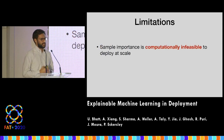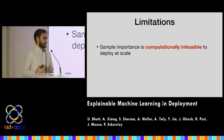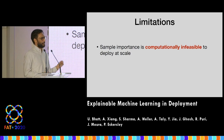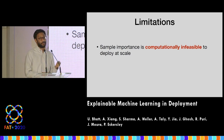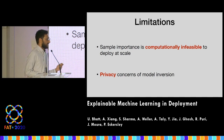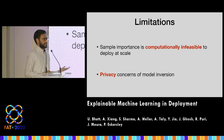Sample importance is well-motivated in the literature, but it's computationally infeasible to deploy at scale. The influence function work and recent work with Fisher kernels has been great for identifying important training samples for a given test point, but it's really hard to deploy even though many organizations want to. Civil societies we spoke with also have privacy concerns — providing access to simple gradient-based explanations could allow reconstruction of training data, potentially leading to model inversion.